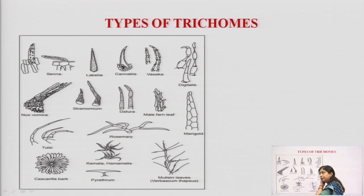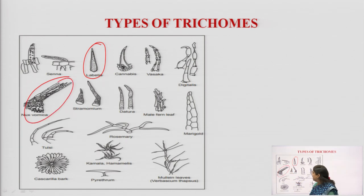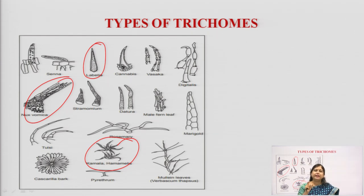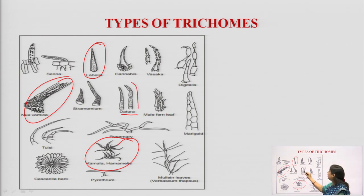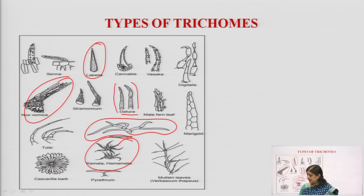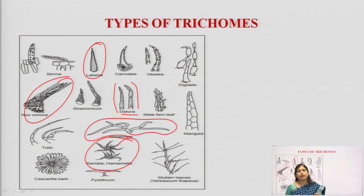These are the different types of trichomes. Trichomes can be unicellular, multicellular, or branched in nature. Each leaf has its own fixed type of trichome. For example, datura has a multicellular but unbranched type of trichome, while rosemary has a branched kind of structure. These are very significant to that particular drug only — they tell us that yes, this drug is having this type of trichome.